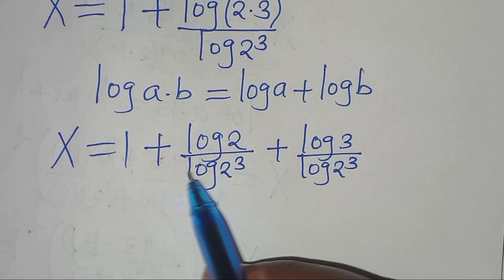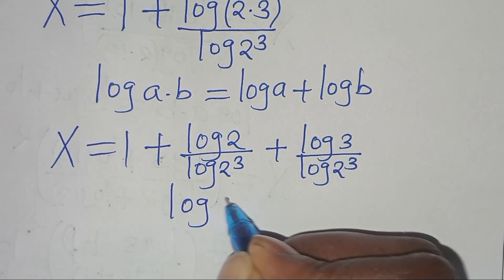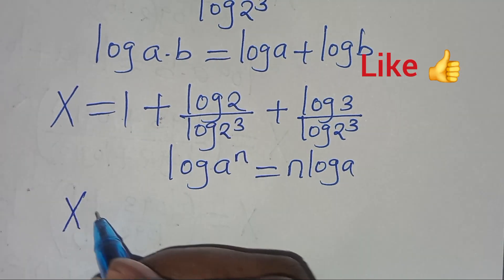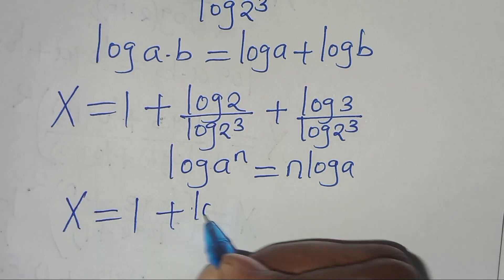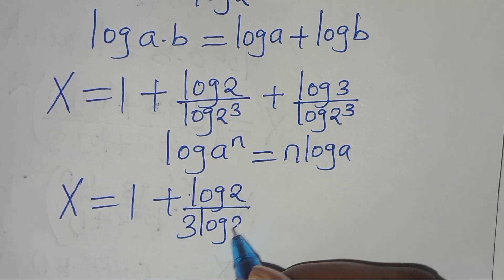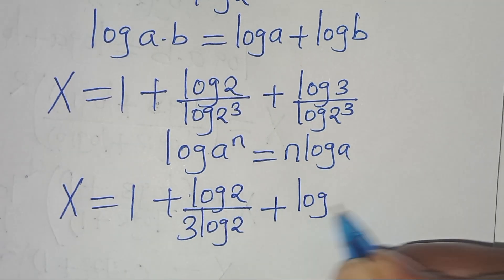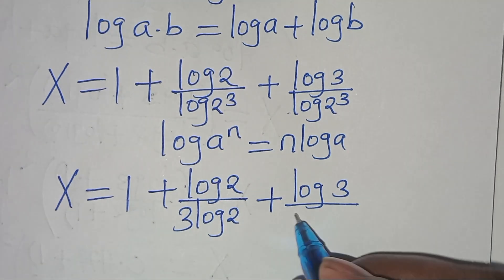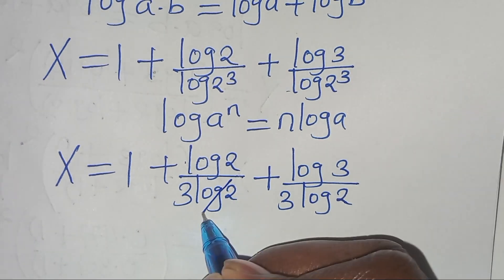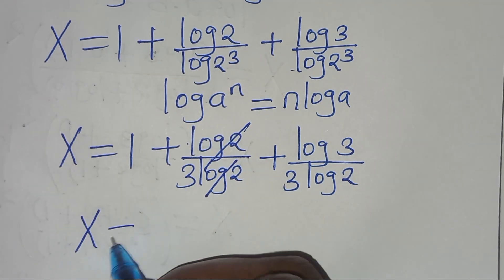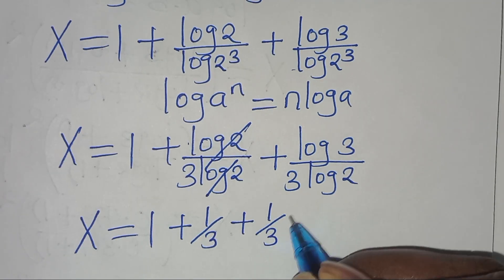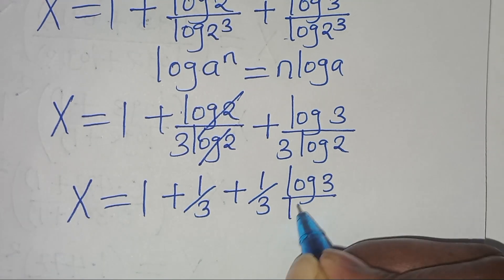We apply the power property, where log(a^n) equals n·log(a), so log(2³) becomes 3·log(2). Simplifying log(2) over log(2), x equals 1 plus 1 over 3, plus (1 over 3)·log(3) divided by log(2).